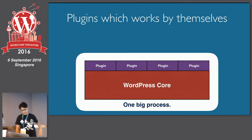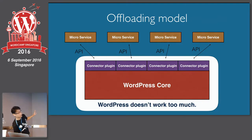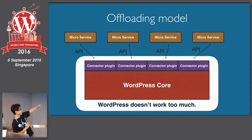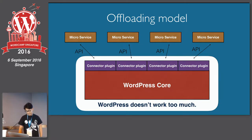Let's look at this model. This describes how usual plugins work. Plugins are included inside one big process — when WordPress is loaded, plugins hook into WordPress and work as one big process. This is the offloading model: connector plugins connect WordPress core and microservices, and the work itself is done outside of WordPress through a RESTful API. This is the basic idea when you want to offload something.